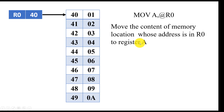The memory address is in R0, so 40 is the memory address and that data is to be moved into register A. So the number 01 will be moved into register A.